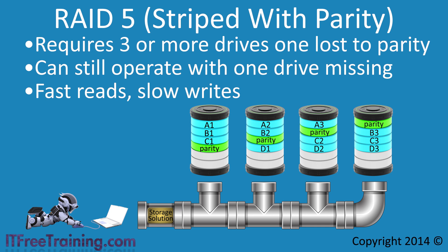Since RAID 5 effectively only loses one drive for redundancy and offers performance increases for reading, it has been popular in business, but that popularity has reduced in recent years. The main problem with RAID 5 is that if a drive fails, it is possible for a second drive to fail before a new drive is installed and rebuilt. With drives getting larger, rebuild time is increasing, and it is not uncommon in business to have RAIDs with 10 or more drives. If a second failure occurs during the rebuild, all the data in the RAID would be lost. So essentially there are two issues: write performance and the ability to deal with multiple failures.